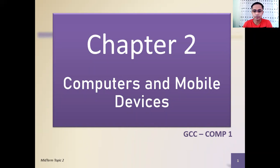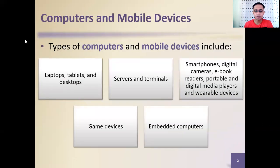Today we will discuss Chapter 2, titled Computers and Mobile Devices. This is the second topic for midterm. We have different types of computers and mobile devices, including tablets, laptops, desktops, servers and terminals, smartphones, digital cameras, e-book readers, portable and digital media players, wearable devices, game devices, and embedded computers.